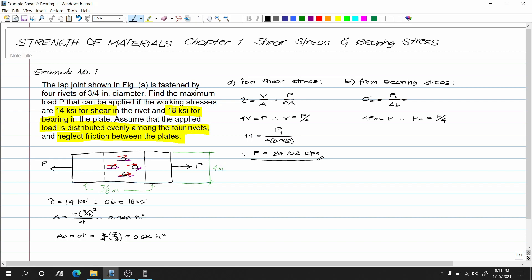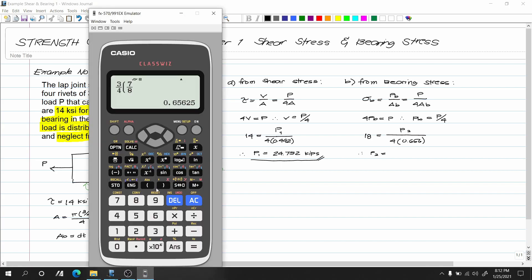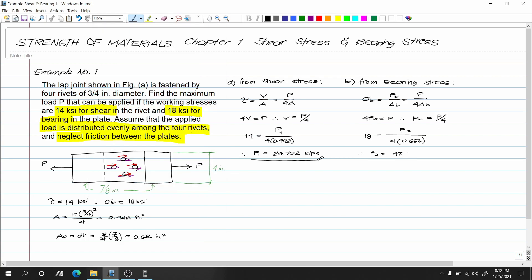The bearing stress equals (P/4) multiplied by Ab. What is the bearing stress? It equals 18 KSI. So we use P2: 18 equals P2/4 multiplied by Ab of 0.656. Therefore, P2 equals 18 multiplied by 4 multiplied by 0.656, which equals 47.232 kips.